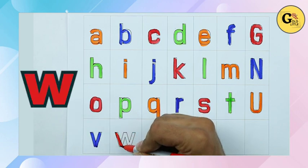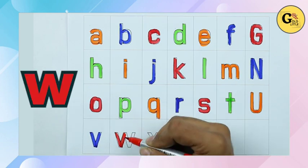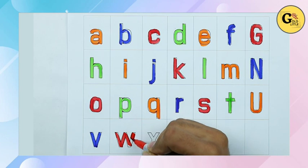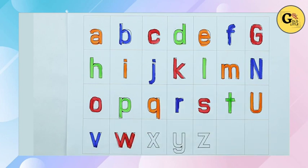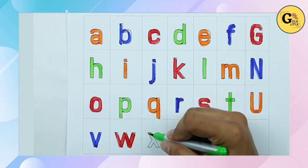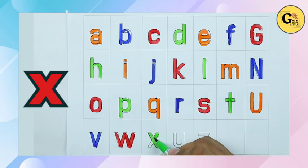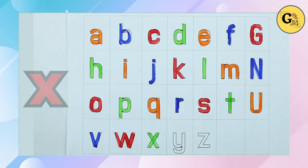W. Small w with red color. W for watch. X. Small x with green color. X for xylophone.